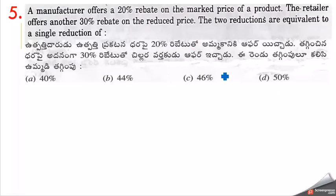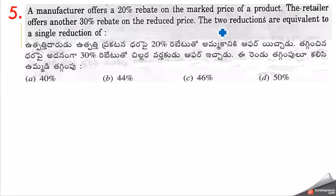A manufacturer offers a 20% rebate on the market price of a product. The retailer offers another 30% rebate on the reduced price. The two reductions are equivalent to a single reduction of how much?